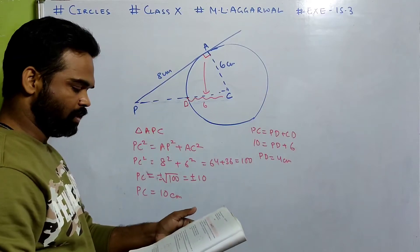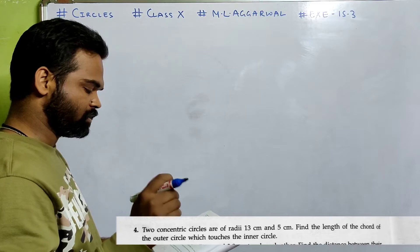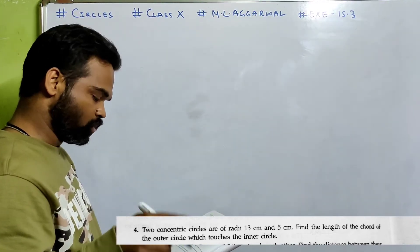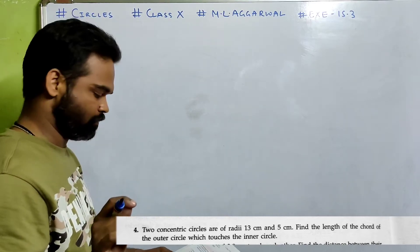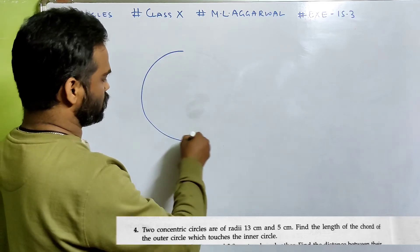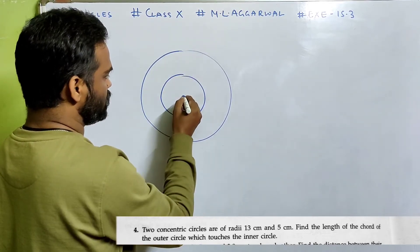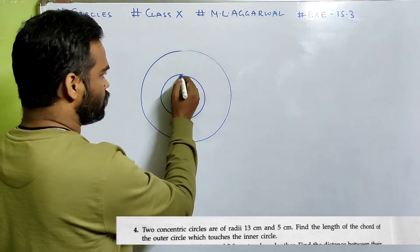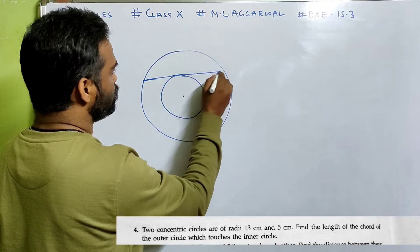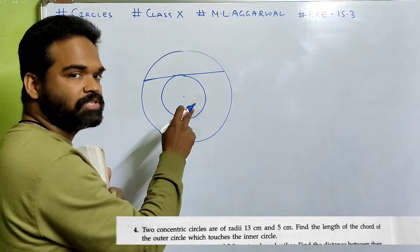Let us look at number 4. Two concentric circles are of radii 13 cm and 5 cm. Find the length of the chord of the outer circle which touches the inner circle. Concentric circles means circles having the same center. There is a chord of the outer circle which just touches the inner circle — so for the inner circle it is a tangent, and for the outer circle it is a chord.